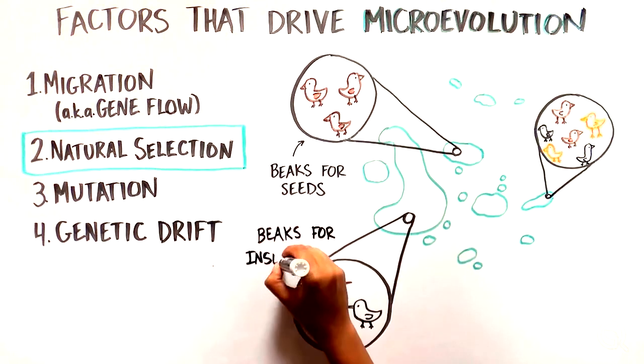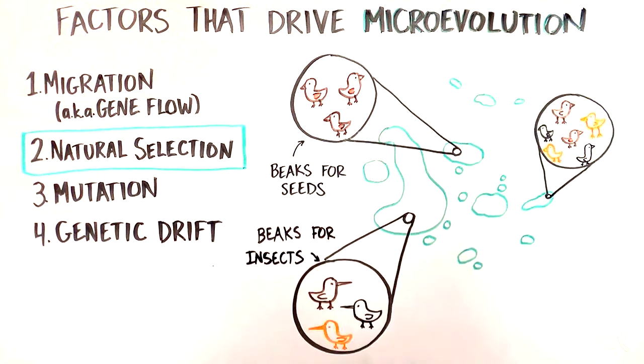This is referred to as having a fitness advantage. Over time, the finches with the beak shape better for eating the corresponding food source bred with each other and thus passed on that trait through the generations. A clear example of evolution.